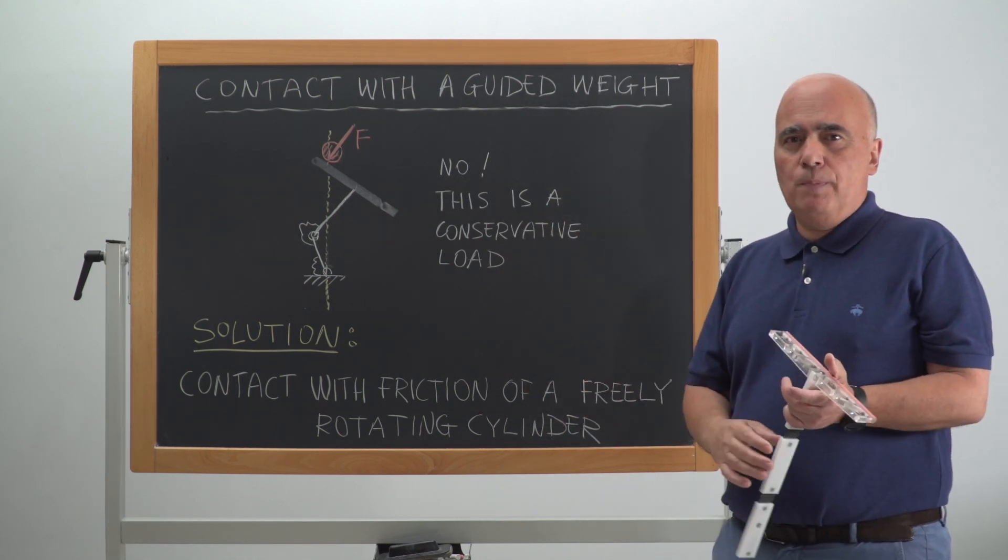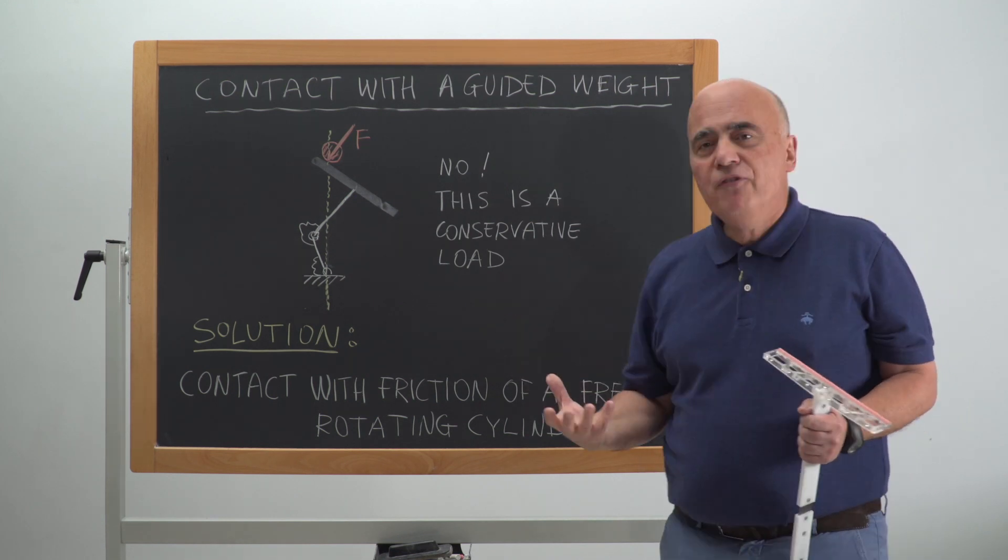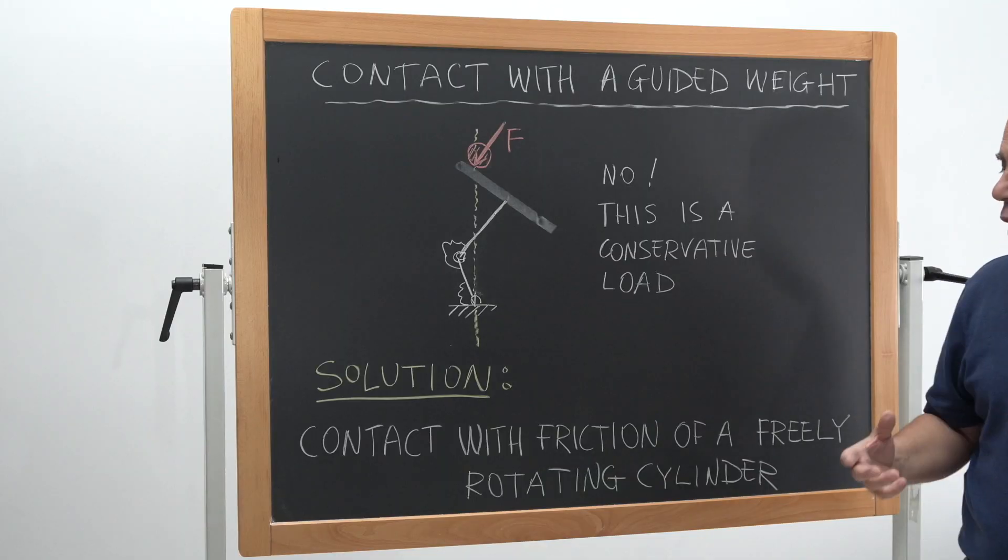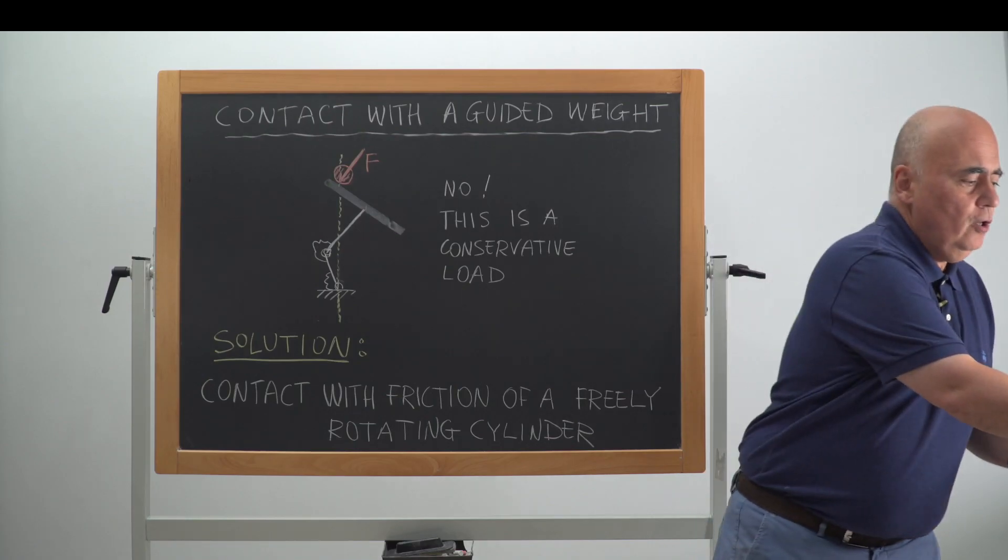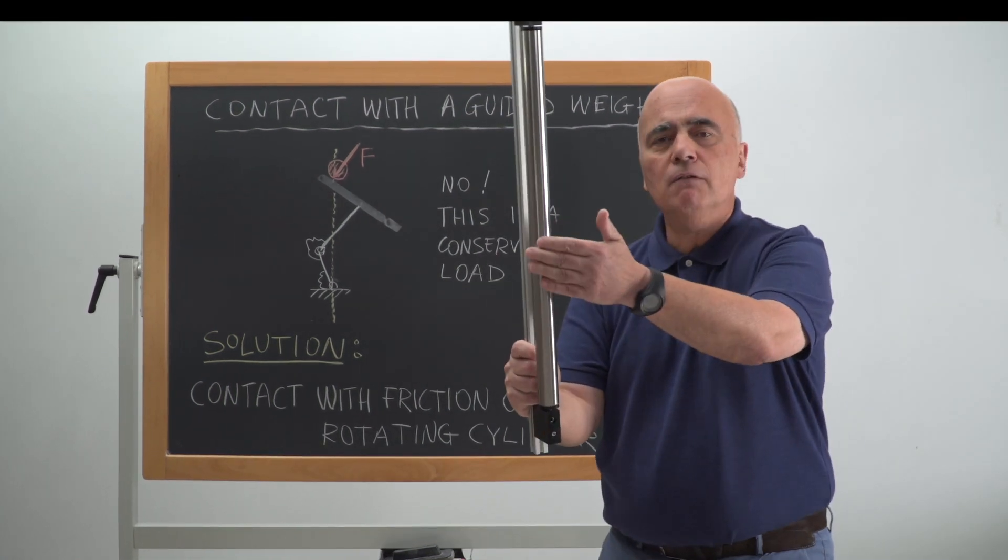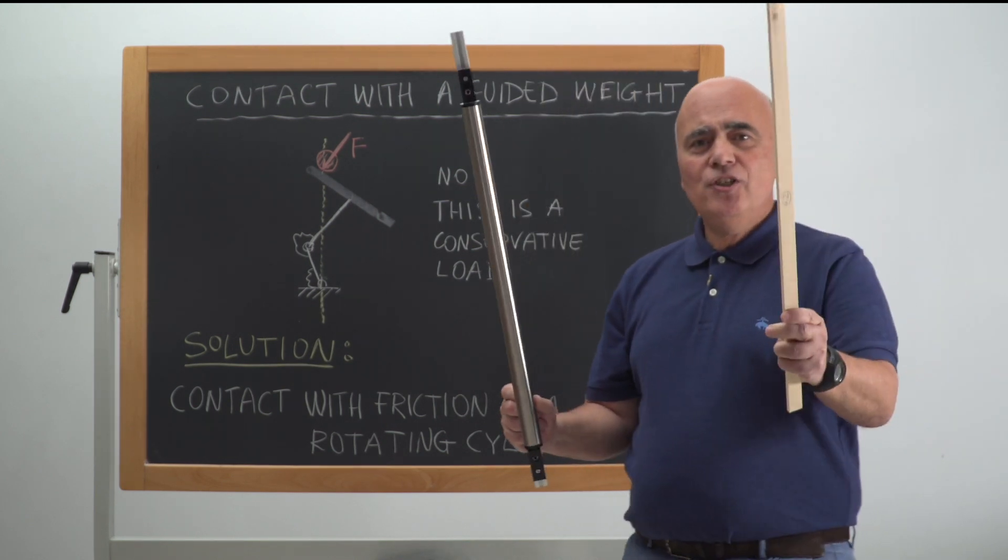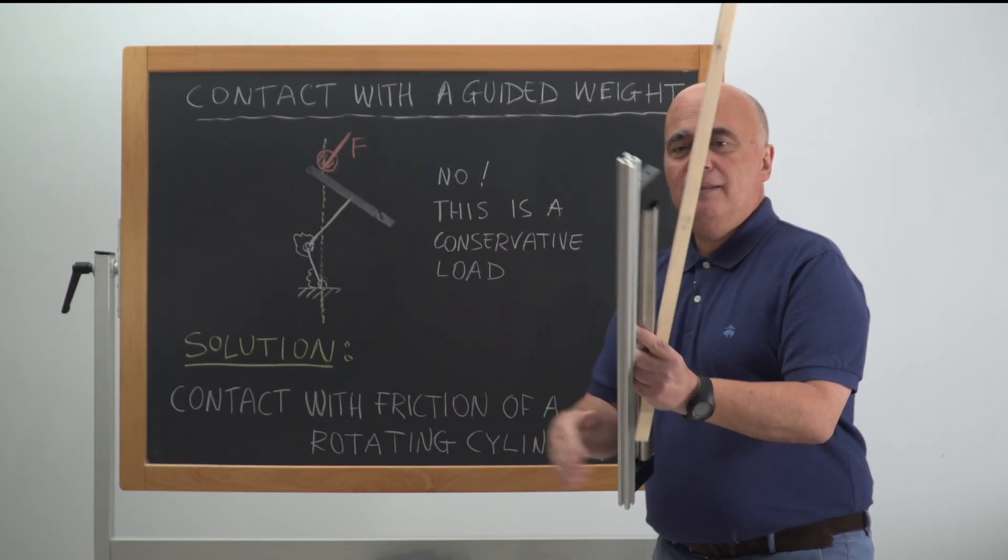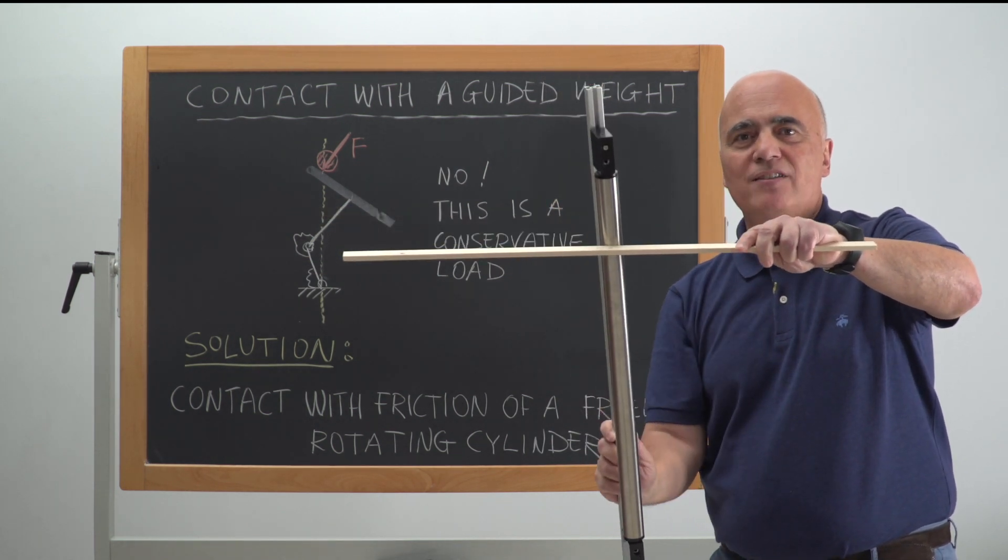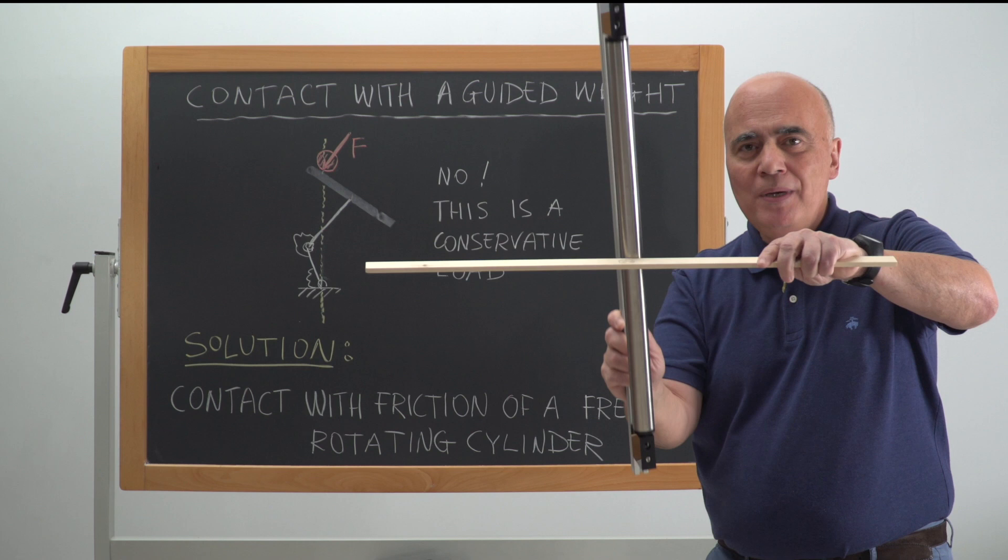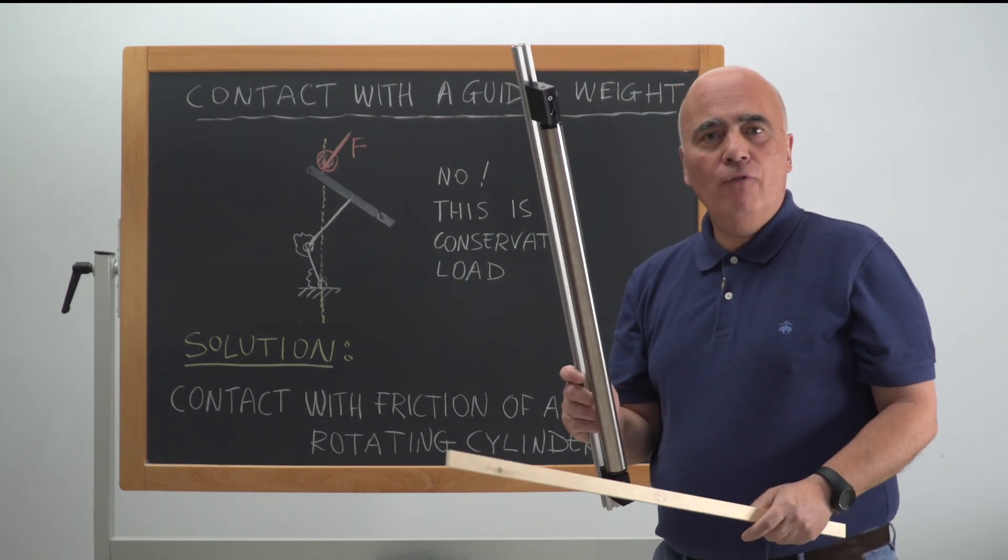Now what is the key to solve this problem? The key to solve this problem is to exploit Coulomb friction. And particularly, we should exploit the contact with friction of a freely rotating cylinder. So this is the freely rotating cylinder. It can freely rotate about its axis. And imagine this is this rigid element. When this element touches the cylinder and the cylinder slides with friction against it, it can only transmit a frictional force aligned with the axis of the tube.